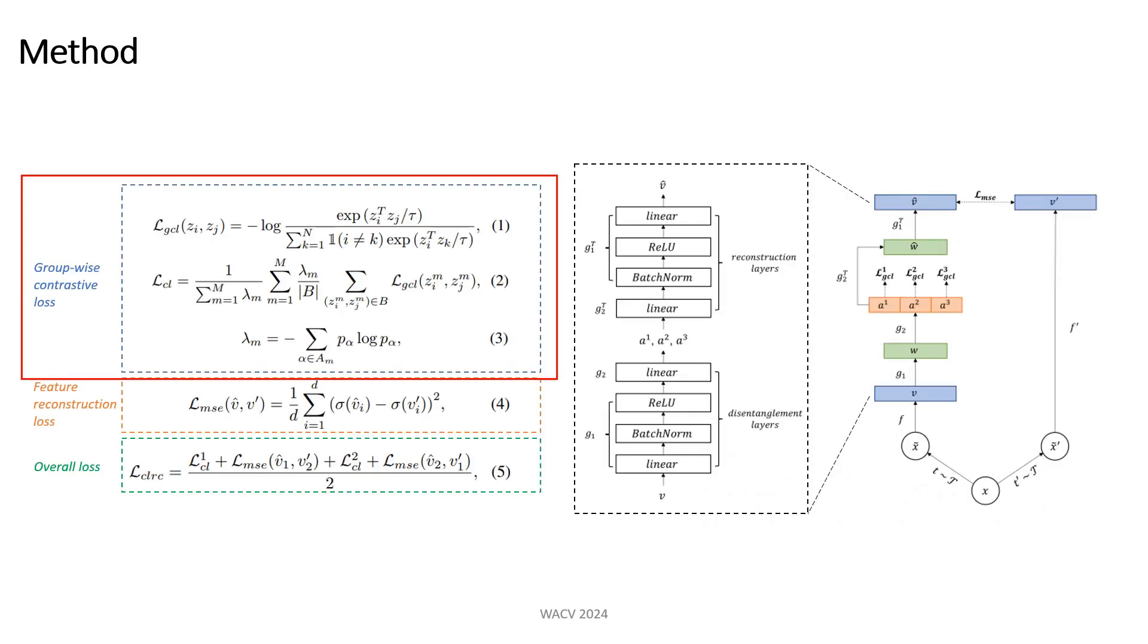Formally, the groupwise learning objective is given by equations 1 to 3, where equation 1 is the contrastive loss applied at the subspace level and equation 2 is the sum of the losses from all subspaces. In addition, the contrastive losses are weighted by the entropy of each group computed from the training data as given in equation 3. For more information on the specifics of the learning objective, please refer to our paper.